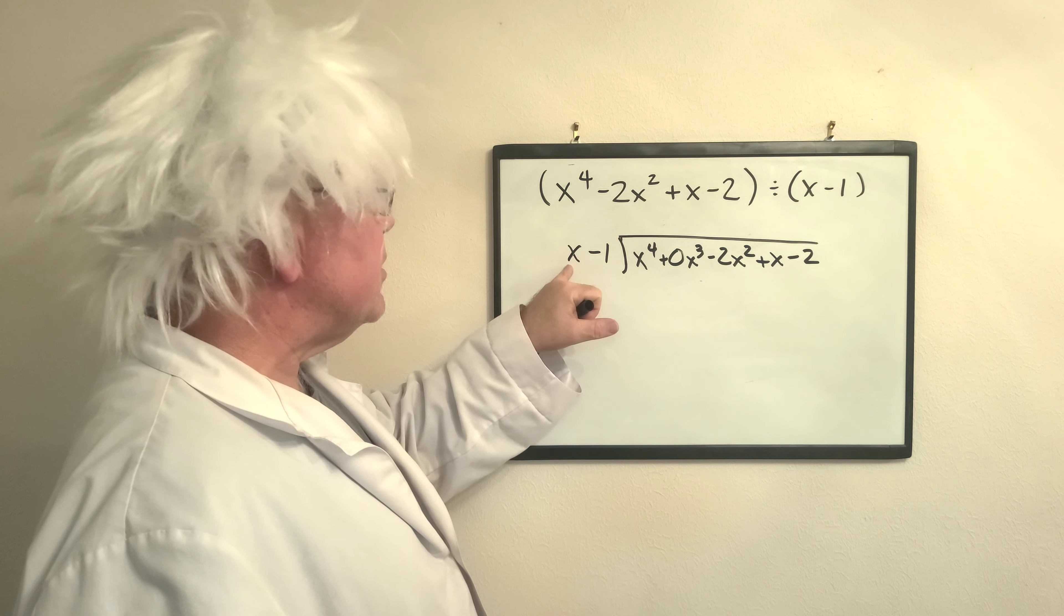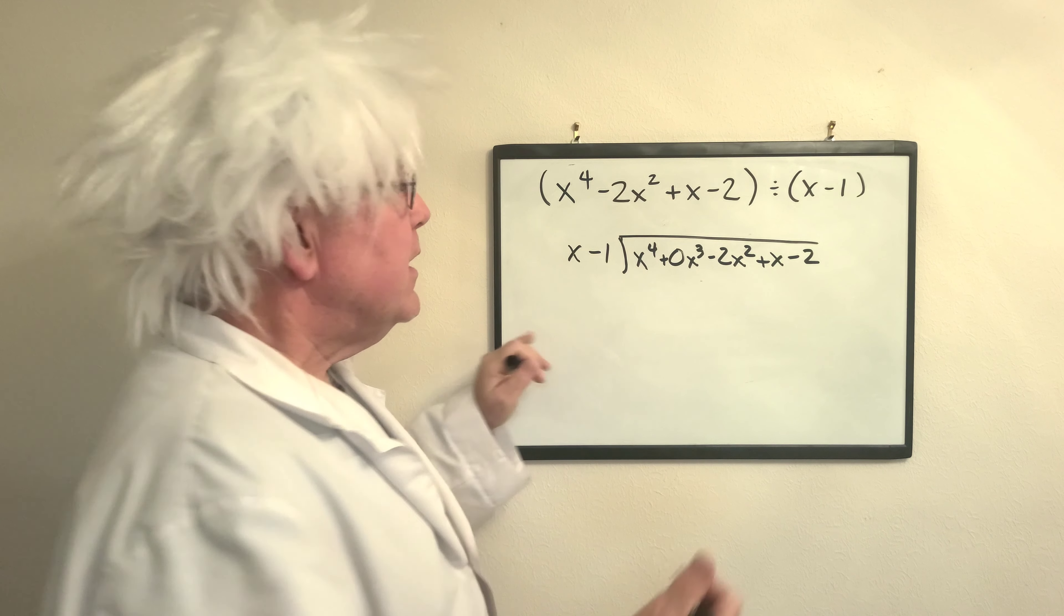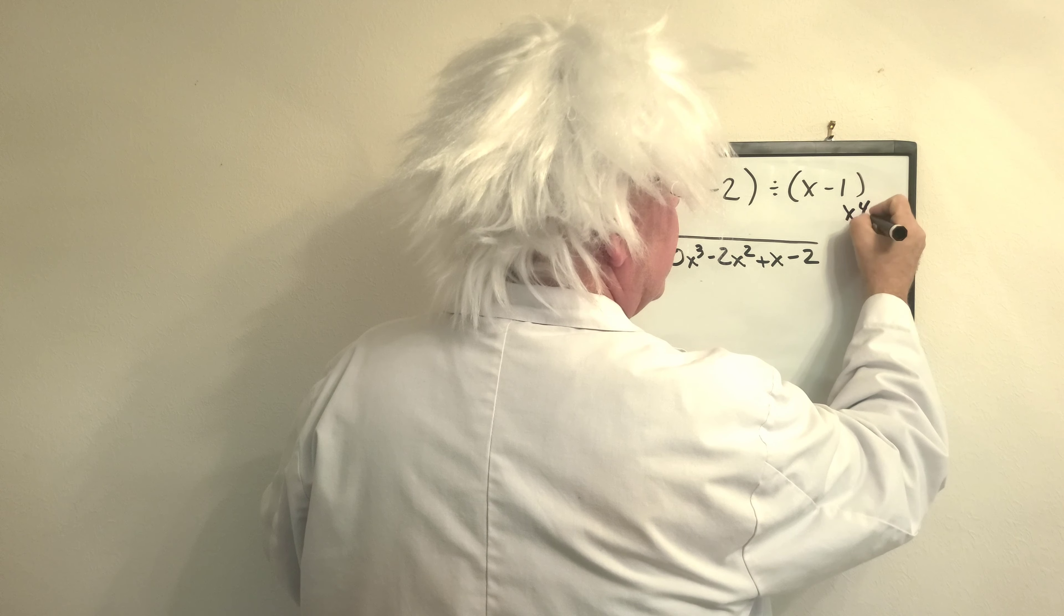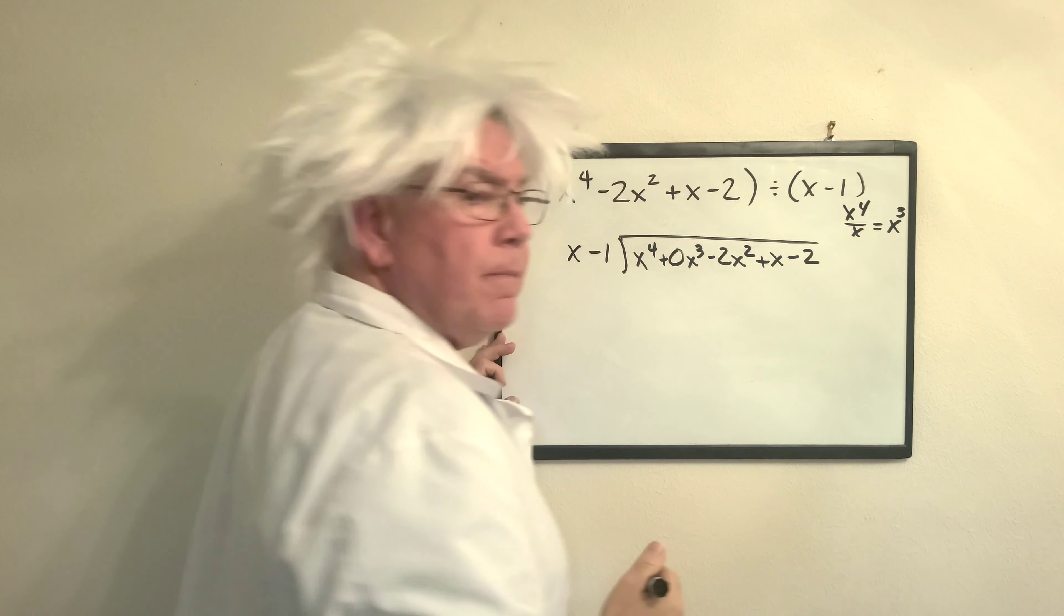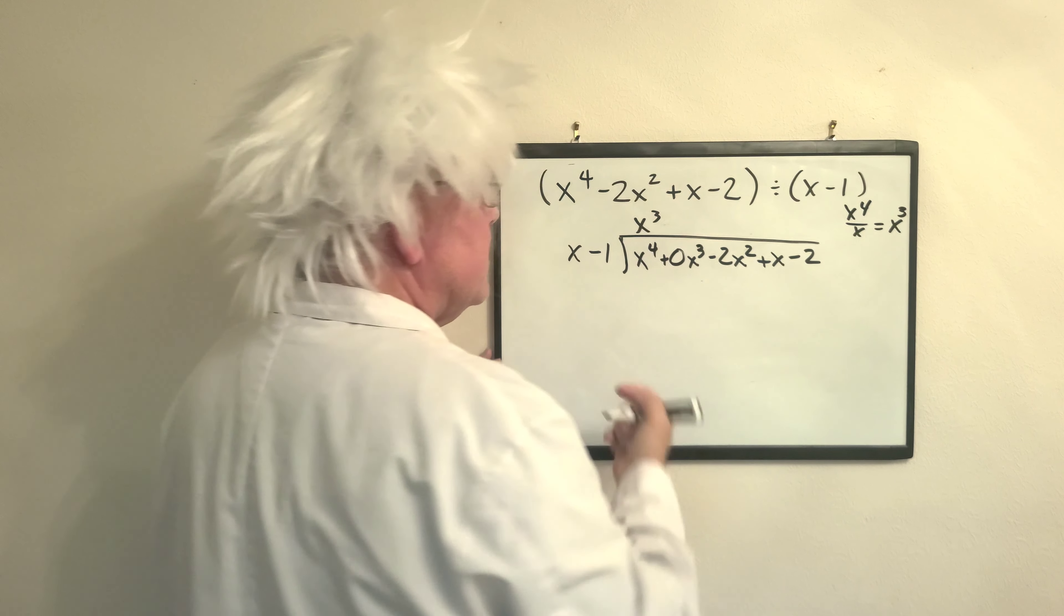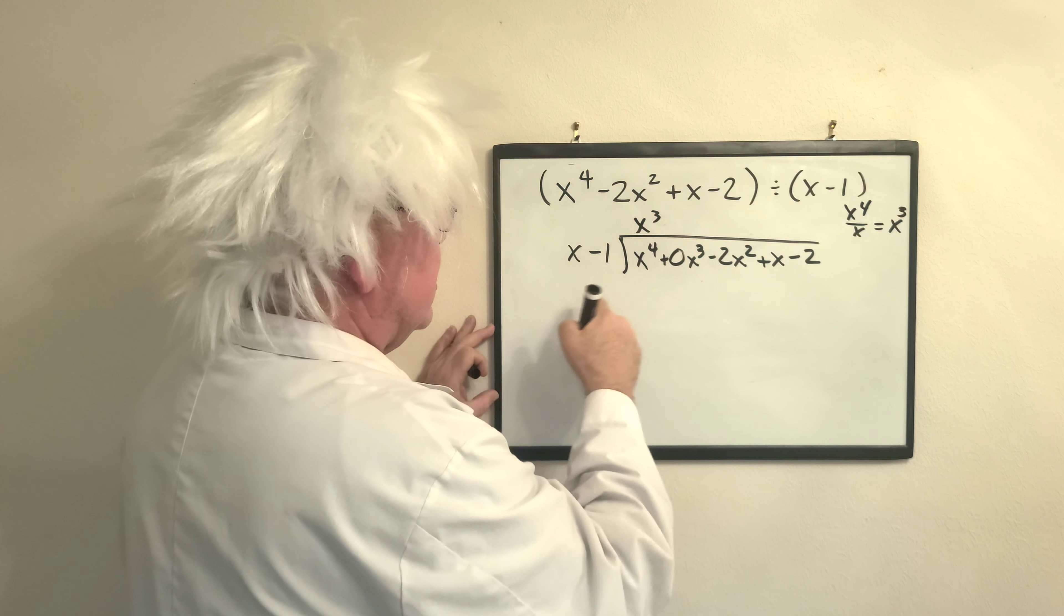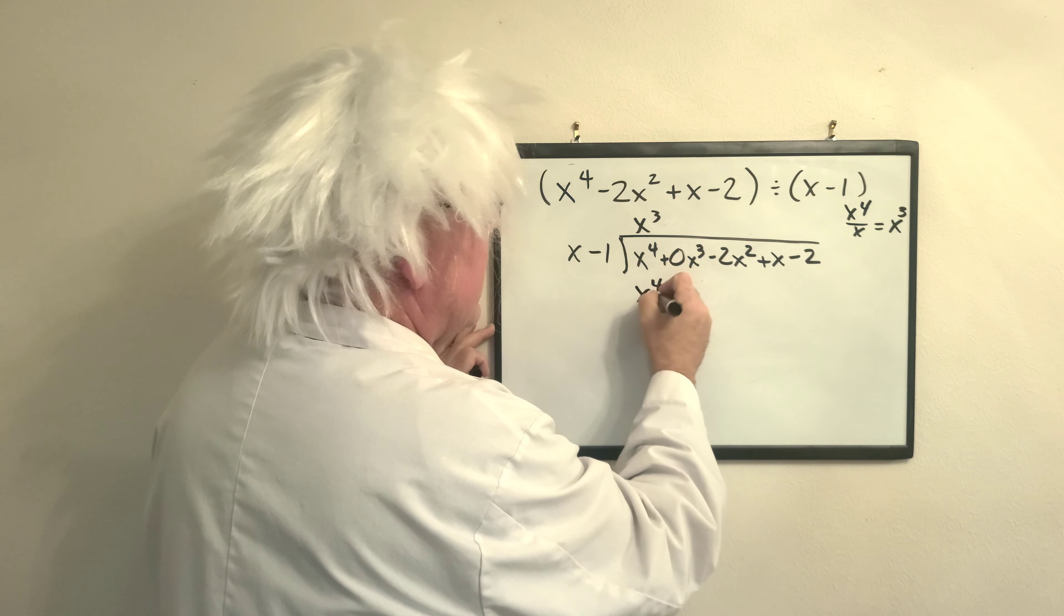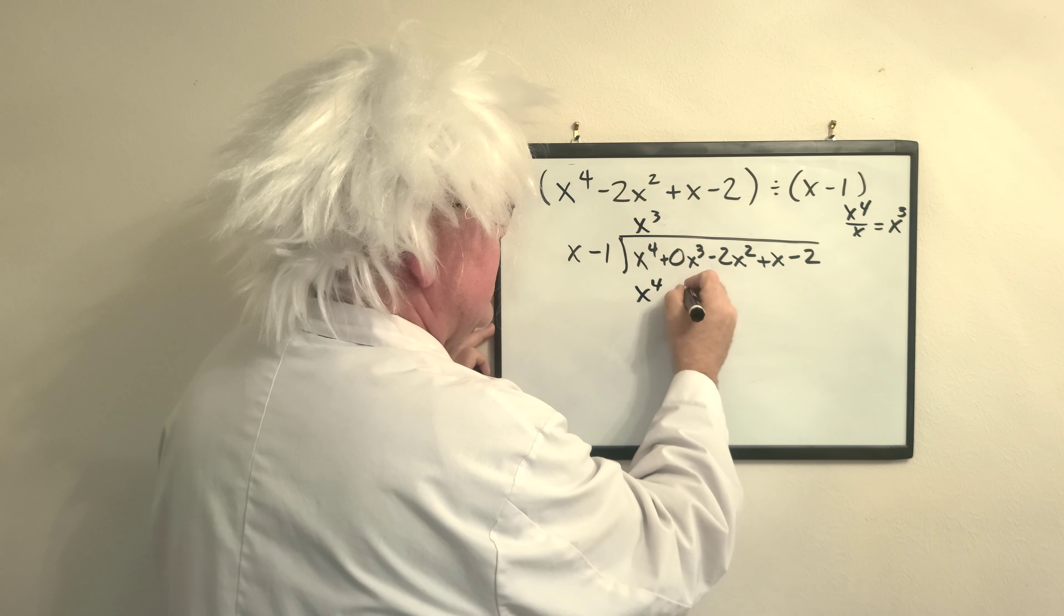So you say, how many times is x going to x to the fourth? So we say x to the fourth over x equals x cubed. Exponent rules. So it's x cubed times. So watch this. We'd say x cubed times x is x to the fourth. x cubed times negative x is negative x cubed.